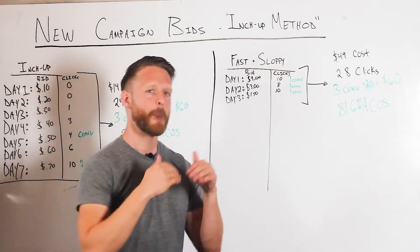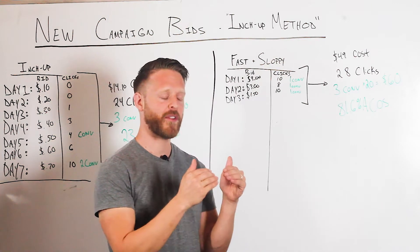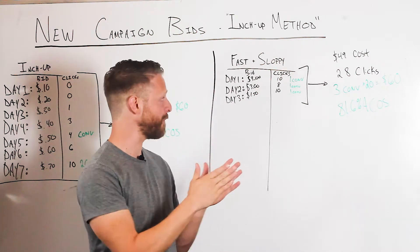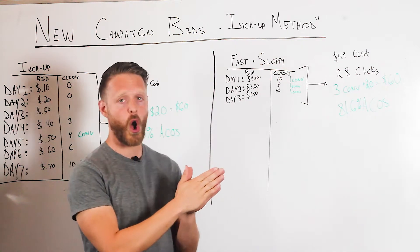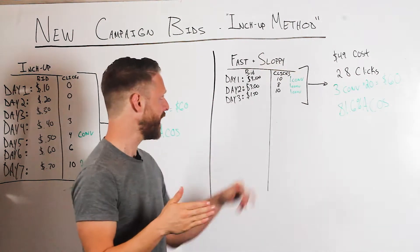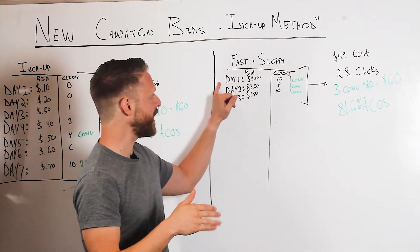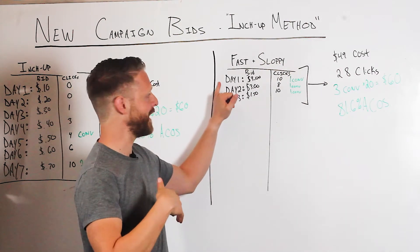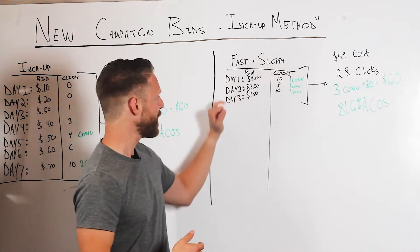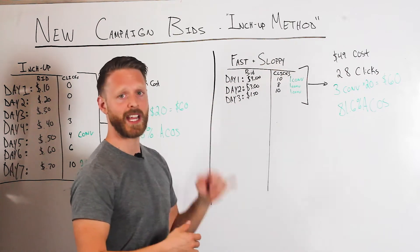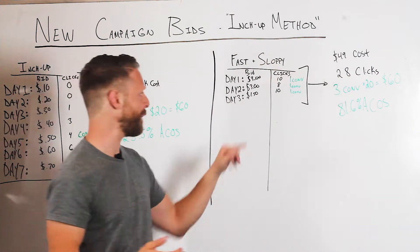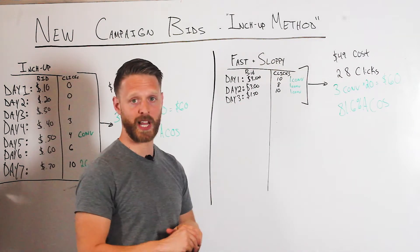Fast and sloppy involves bidding aggressively — maybe overshooting where we actually need to be. So maybe day one they spend three dollars a bid, day two three dollars a bid, and by day three they realize 'whoa, three dollars a bid is quite a bit — I'm going to bring it back down to a dollar fifty.'